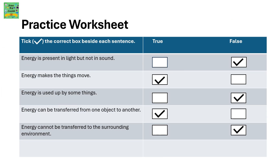Practice worksheet. Tick the correct box beside each sentence. 'Energy is present in light but not in sound.' It's false — energy is present in light as well as sound. 'Energy makes things move.' It's true — for example, the hammer makes the nail move. 'Energy is used up by some things.' It's false — energy cannot be used up, lost, or destroyed. 'Energy can be transferred from one object to another.' It's true. 'Energy cannot be transferred to the surrounding environment.' It's false — it can be transferred to the surrounding environment as heat or sound.